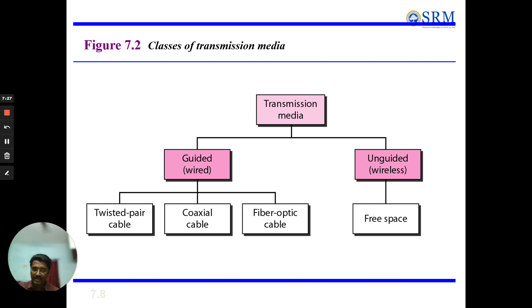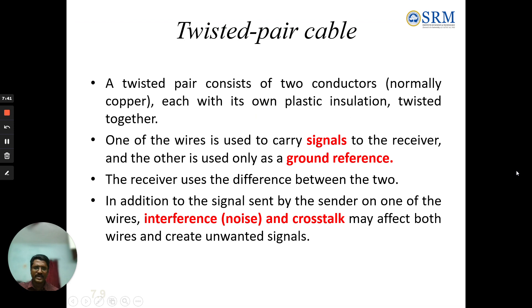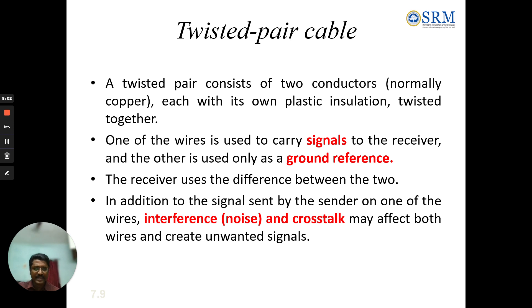A twisted pair cable consists of two copper conductors, each with its own plastic insulation, twisted together. One of the wires carries the signal to the receiver, and the other is used as a ground reference; the receiver uses the difference between the two. Interference, noise, and crosstalk may affect both wires and create unwanted signals.